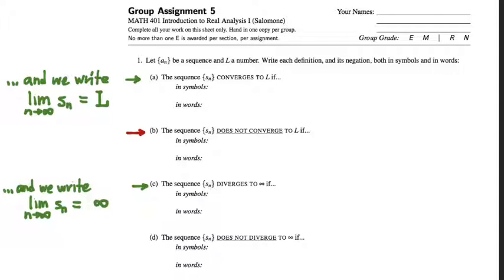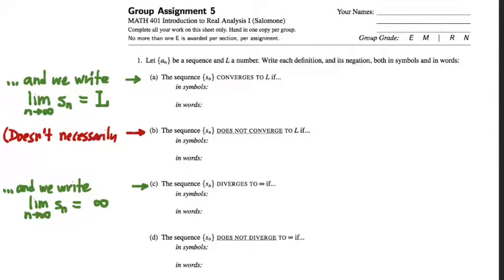Let's talk about this first pair of definitions: what it means for a sequence to converge to a limit L, and then secondly, what it means if a sequence does not converge to that limit L. Before we get to that, I want to make the point that when we write the negation of this definition, it doesn't necessarily mean that the limit doesn't exist. It just means that the limit could exist, but the limit for sure is not equal to L.